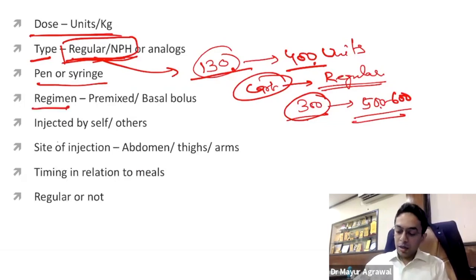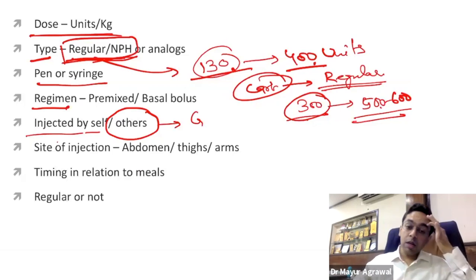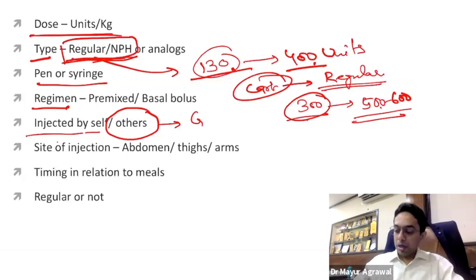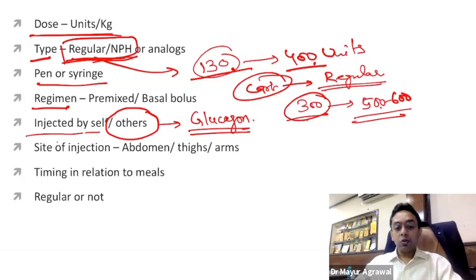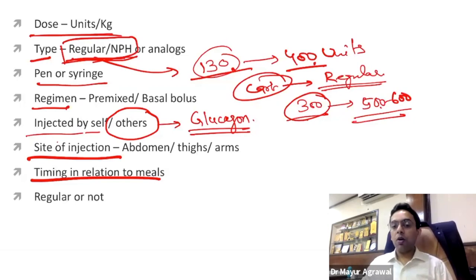You also need to discuss whether the patient will self-inject and teach a family member as well, because in severe hypoglycemia — if the patient becomes unconscious — a relative may need to help. Glucagon, which is injected like insulin, is something relatives should also know. Discuss site of injection, time of injection in relation to meals: for basal insulin, teach fixed timing; for bolus analog insulin, 5 to 10 minutes before the meal depending on the analog; for regular insulin, 15 to 20 minutes before the meal.